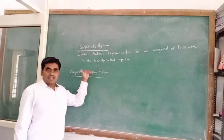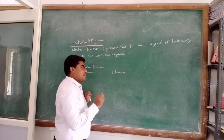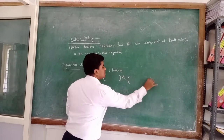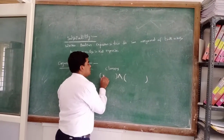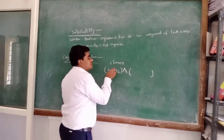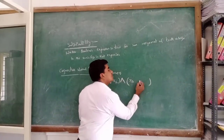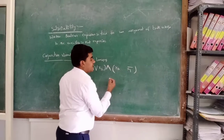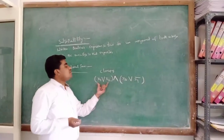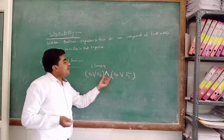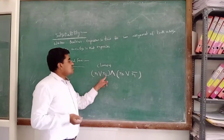Conjunctive normal form consists of classes. These classes are separated with an AND operation. Each class consists of literals — for example, x1 and x2. Within a class, literals are separated with an OR operation. For instance, another class may consist of x3 and x4, also separated with OR.